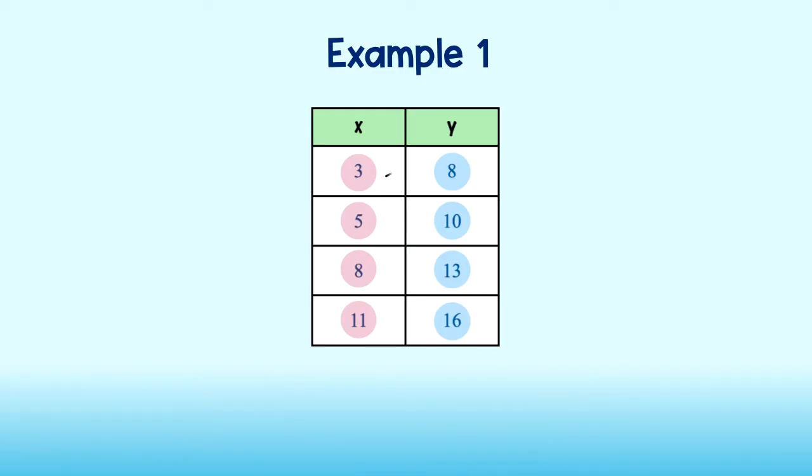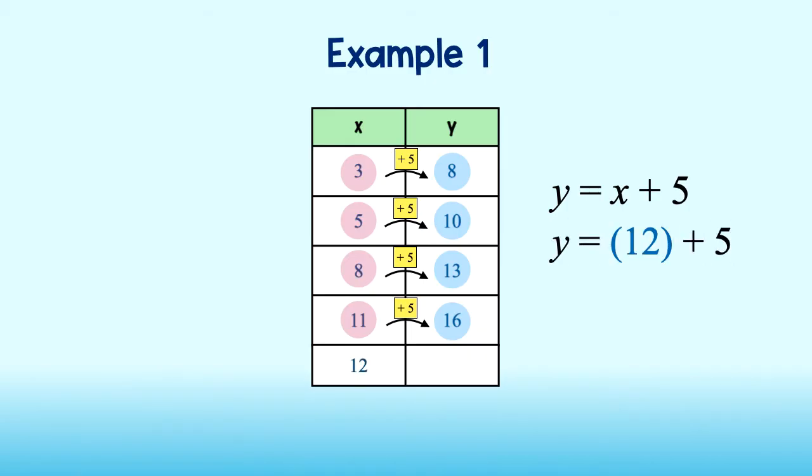Now, how do we get from each input to the corresponding output? This might take some critical thinking, but I can see that adding 5 to each x value will give me the corresponding y value. Therefore, my equation is y equals x plus 5. We can even determine other values in the function now. For instance, if x is equal to 12, I can input 12 into my equation to see that y is equal to 17. Good job!